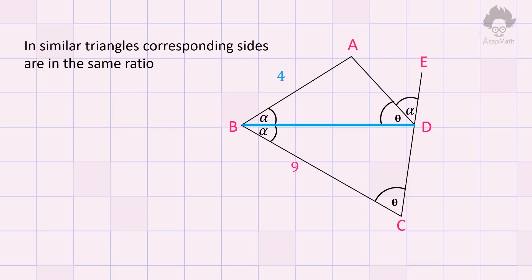Hence, the ratio between BD to 4 should be equal to the ratio between 9 to BD. We can solve this and obtain the answer for BD as 6.